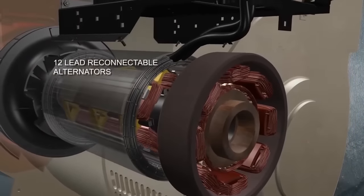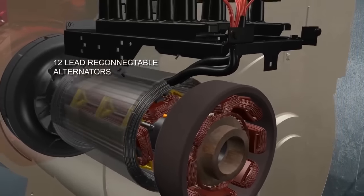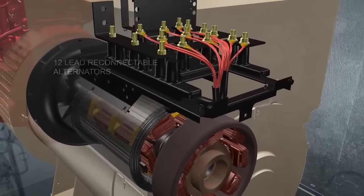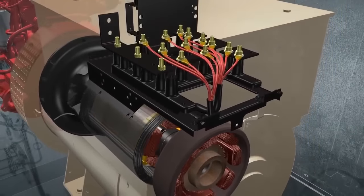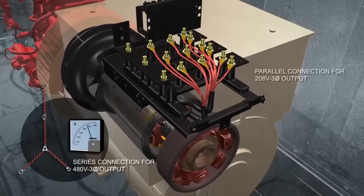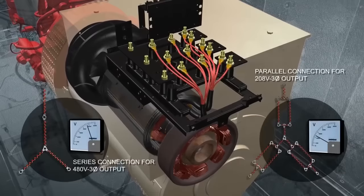Doosan Mobile Generators also include alternators with six coils wound into the stator. This provides three voltage sources or phases. Because each phase combines two coils of wire, the sources can be connected in series for high voltage applications or in parallel for low voltage needs.